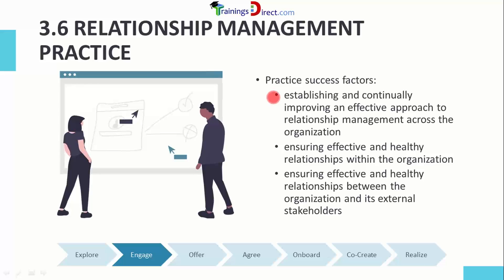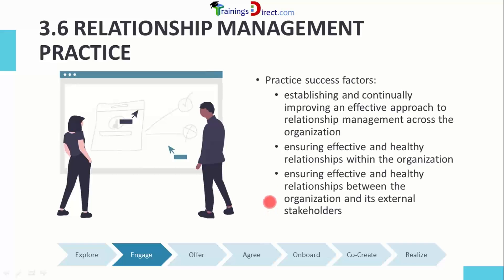There are three practice success factors. First, establishing and continually improving an effective approach to relationship management across the organization — meaning there should be some effective approach for relationship management. Second, ensuring effective and healthy relationships within the organization. Once the approach is established, it has to be used properly. Lastly, ensuring effective and healthy relationships between the organization and its external stakeholders, so the approach should facilitate both internal and external relationships.